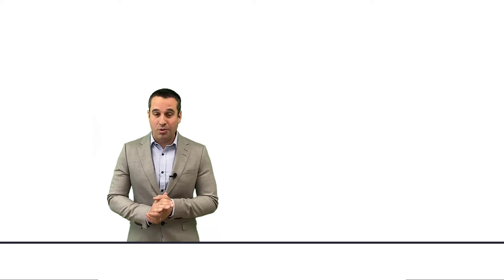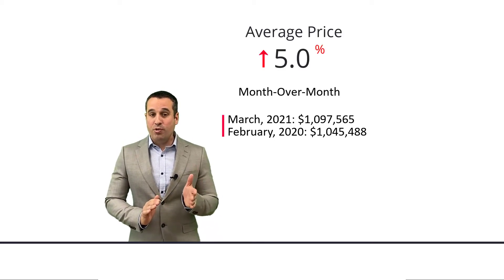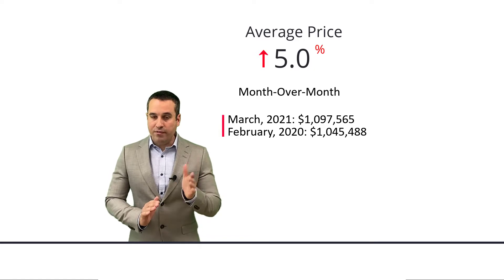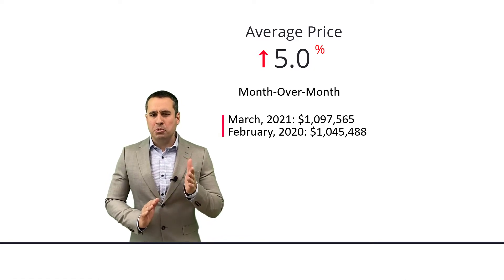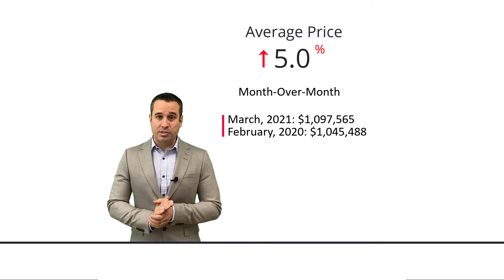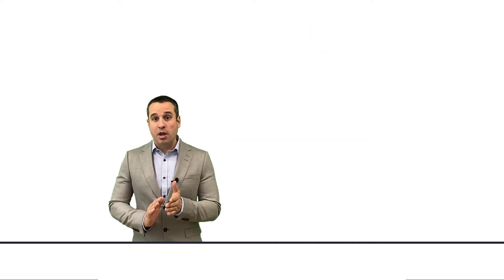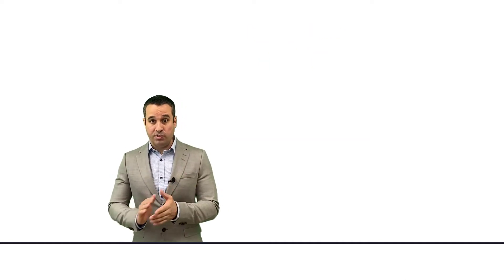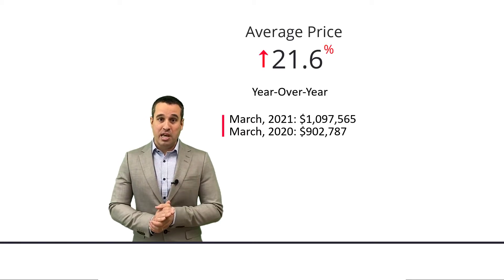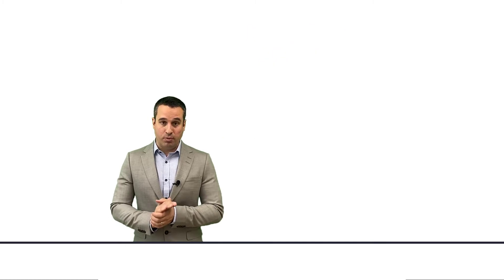Now the average home price in the city of Toronto - if you remember in February, we cracked a million dollars for the very first time, and in March we almost cracked 1.1 million dollars. As you can see, just a hair under 1.1. That's a 5% increase month over month on the heels of an 8% increase from January to February. More astonishingly, we're up 21.6% year over year. That is just unbelievable.